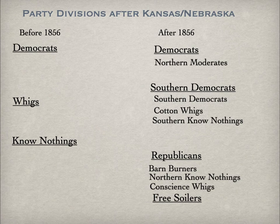So what you have at the end of all this is a sort of new party system in the United States in which there are moderate northern Democrats, southern Democrats, and Republicans.